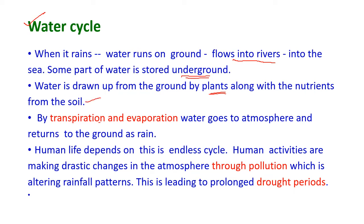By the process of transpiration and evaporation, water goes to the atmosphere and returns to the ground in the form of rain. Human life depends on this endless cycle. However, human activities are making drastic changes in the atmosphere through pollution, which is altering rainfall patterns and leading to prolonged drought periods.